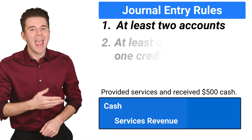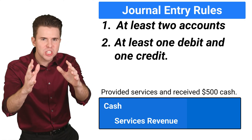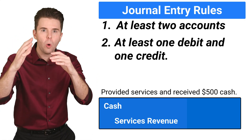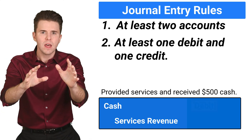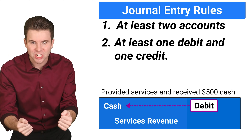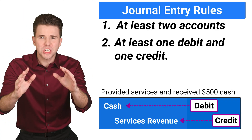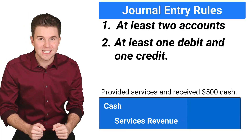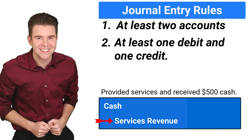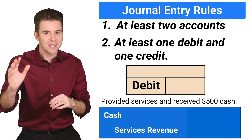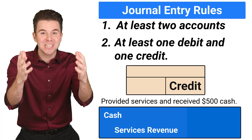Rule number two: every journal entry needs at least one debit and one credit. You need to show which accounts are increasing or decreasing by using debits and credits. In our example, the debit is to increase cash, an asset account. The credit is to increase services revenue. In the journal entry, the debits are listed first on the left-hand side, and credits are listed next and indented to the right. Remember, debit means left and credit means right.